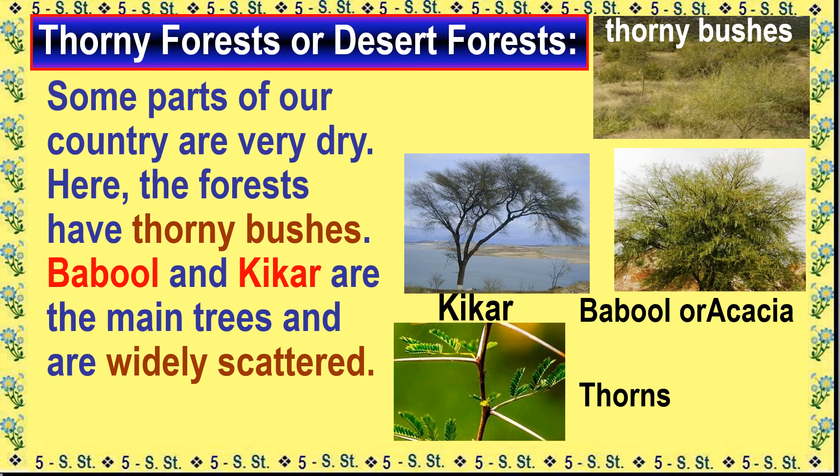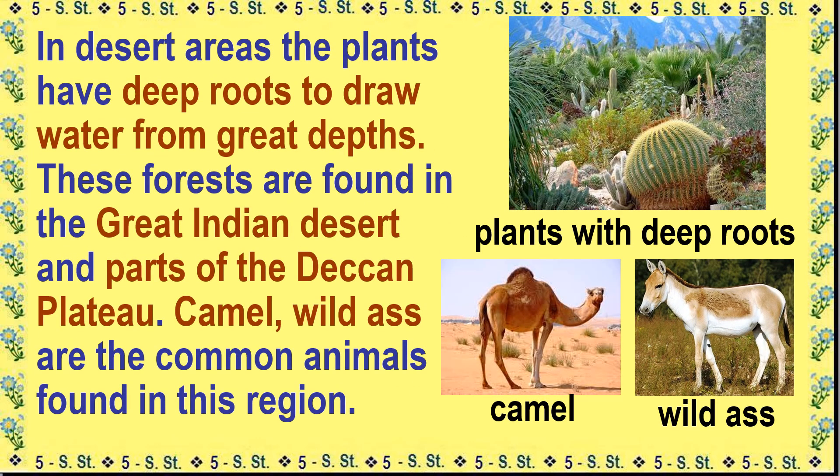Some parts of our country are very dry, where the forests have thorny bushes — these are thorny forests or desert forests. Babul and Kikar are the main trees and are widely scattered. In desert areas, the plants have deep roots to draw water from great depths. These forests are found in the Great Indian Desert and parts of the Deccan Plateau. Camel and wild ass are the common animals found in this region.